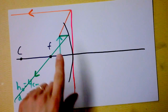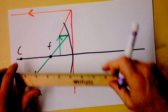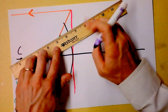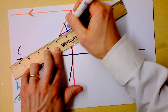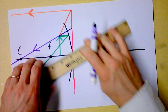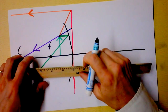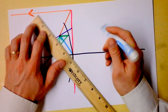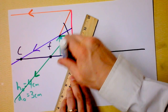We've got a couple more rays to draw. The C ray is as if it had started at C, and then it will go back towards C — it goes towards the mirror, bounces, and comes back in that direction. The M ray goes through the middle and comes back out at that same angle.